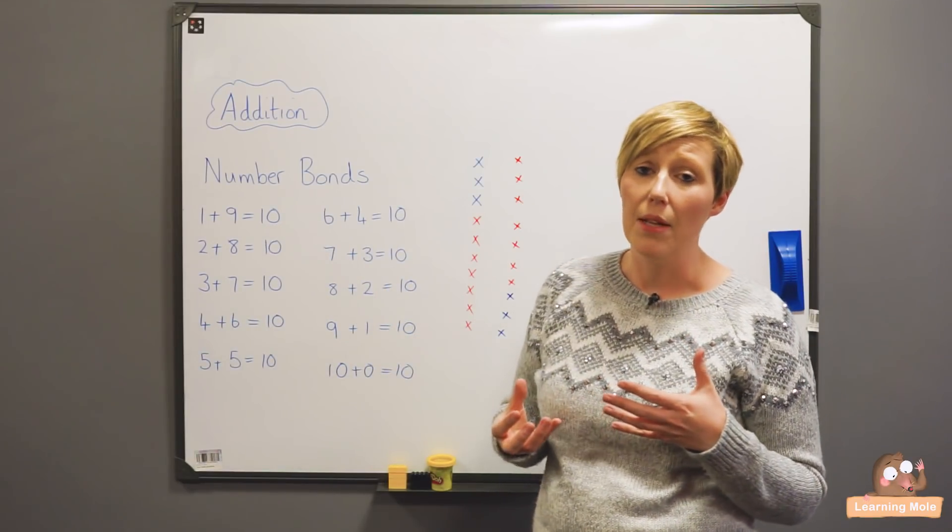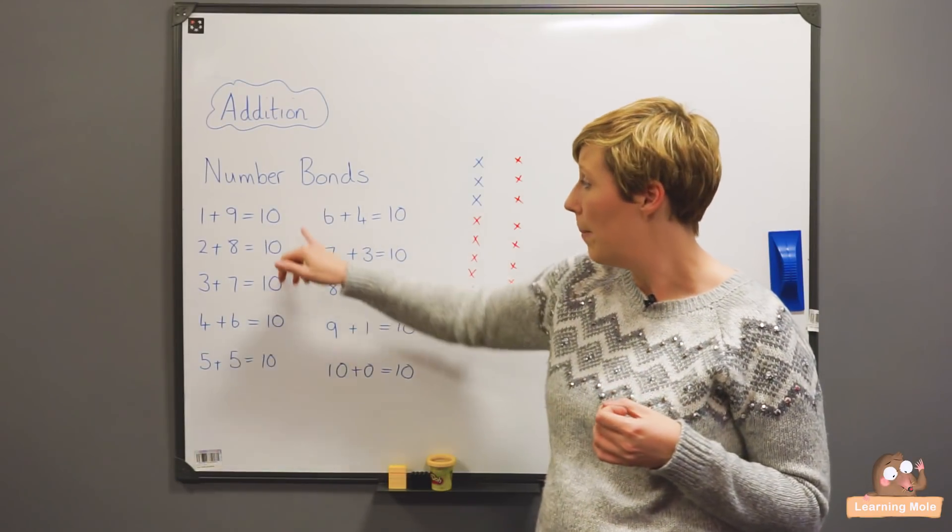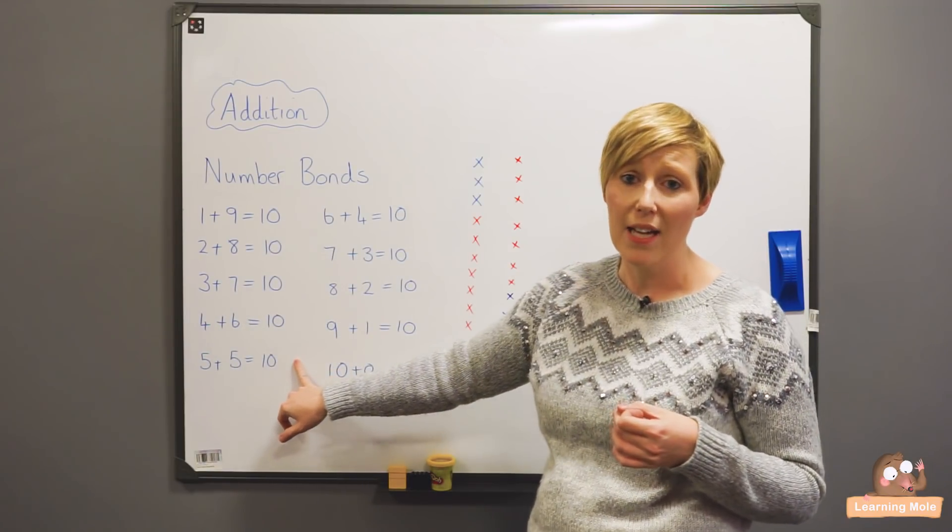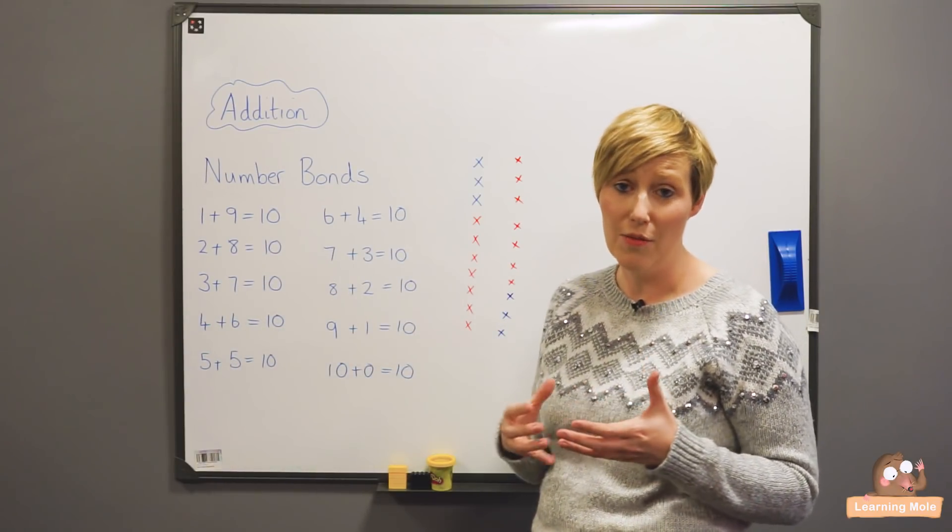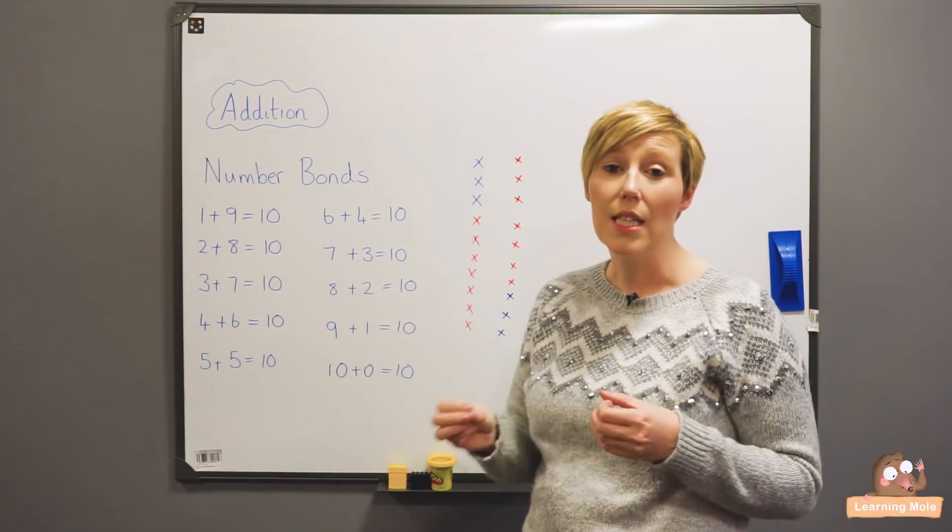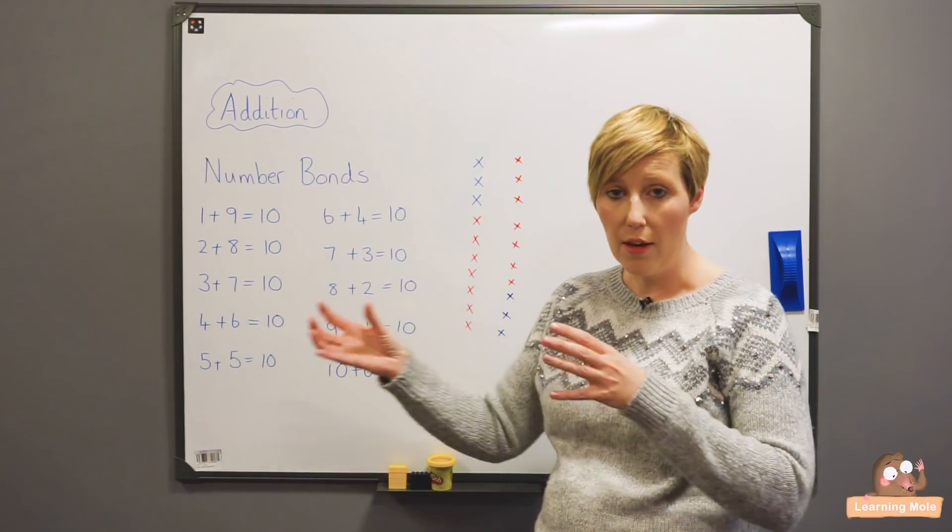Now what I'm saying about the reverse is very, very important because if your child actually learns those first five, they actually know the next five, which is really, really good. But children need to see that relationship between the reverse.